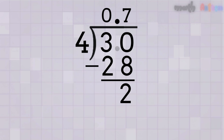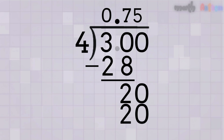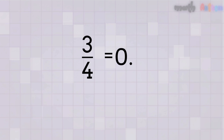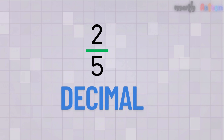Now we subtract: 30 minus 28 equals 2. We still have a remainder of 2, so we're not done yet. If we have a remainder, we just add a zero to the dividend and bring it down to continue dividing. Because 4 can't fit into 2, we bring in another zero. How many times does 4 go into 20? That's easy — 5 times, because 4 times 5 equals 20. We place 5 in the quotient. Subtract: 20 minus 20 equals 0 — no remainder, we're finished. So three-fourths as a decimal is 0.75.